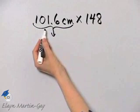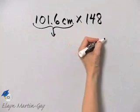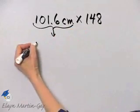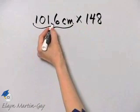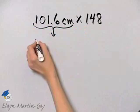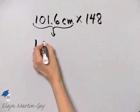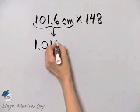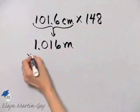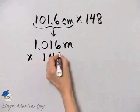If you check your chart, moving from centimeters to meters, you move two places to the left. So we move this decimal point two places to the left, and that is the same as 1.016 meters, and then you'll multiply it by 148.